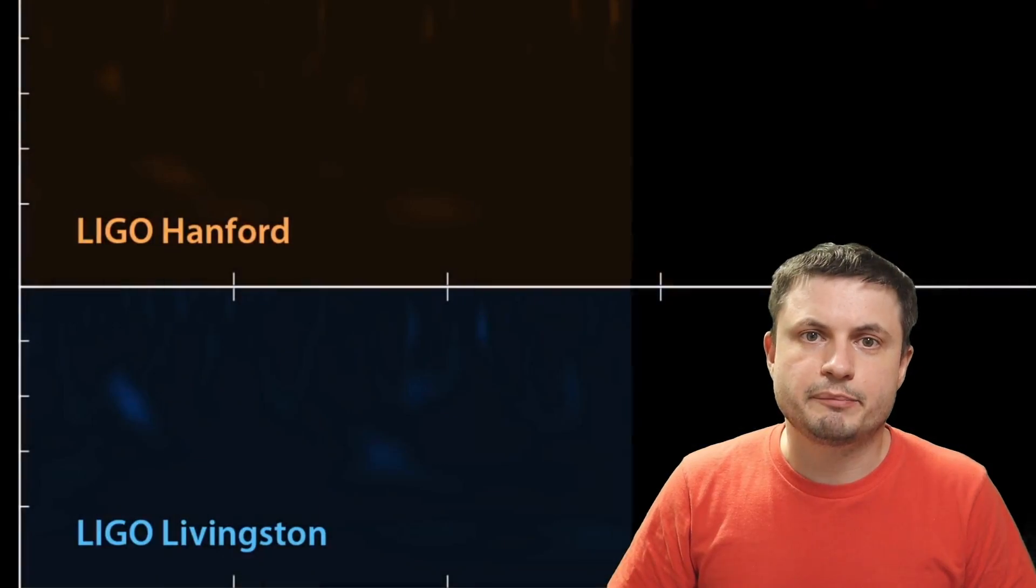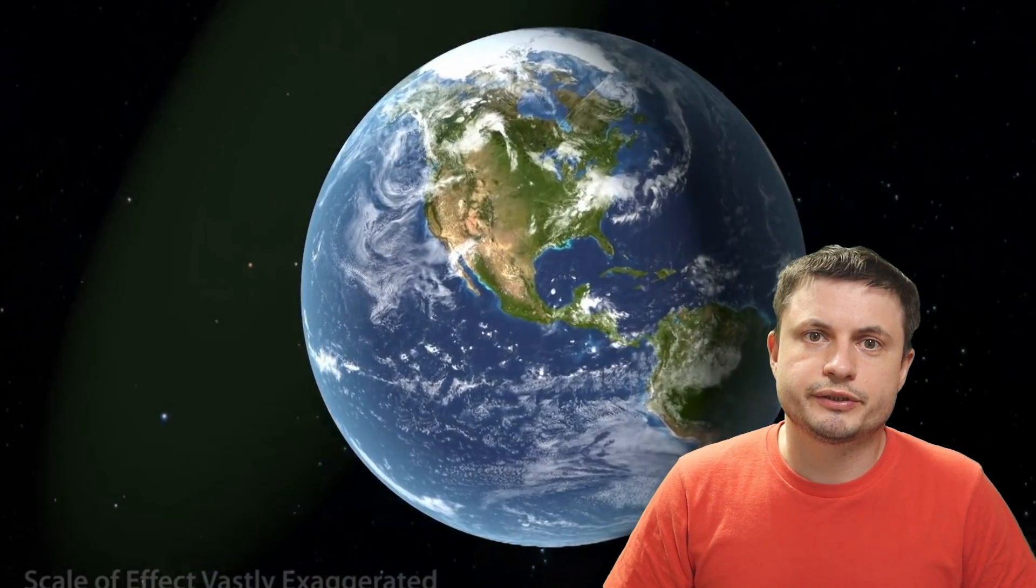But I guess the other question here is did this event produce gravitational waves that were observed here on planet Earth like the previous event that was detected back in 2017, that was naturally detected on planet Earth when the two neutron stars merged producing these powerful effects. Well for this event it seems that it was just a little bit too far. It was about six billion light years away.